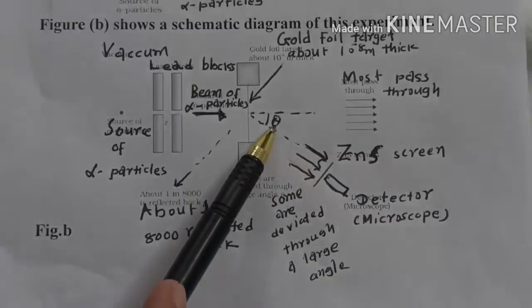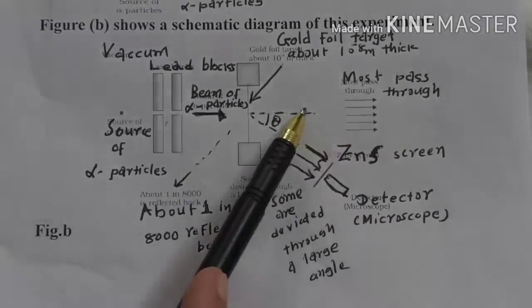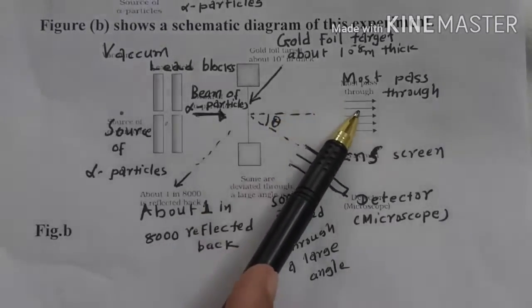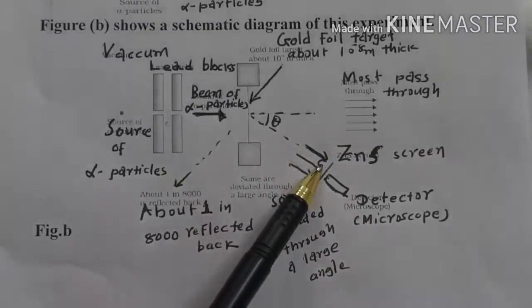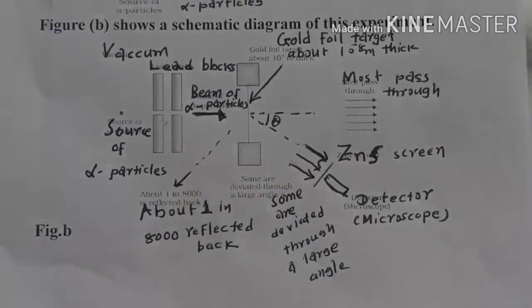Here you can see most of the alpha particles pass through the foil, whereas very few alpha particles scattered at a very large angle.